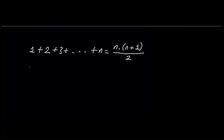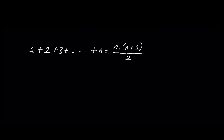Let's start with the first formula of the video. We want to explain why the sum of consecutive positive integers from 1 to n equals n times (n plus 1) over 2.